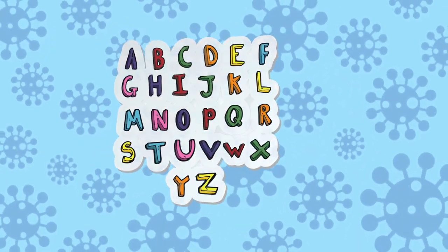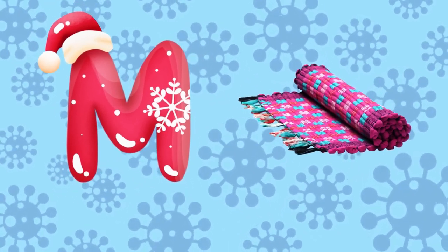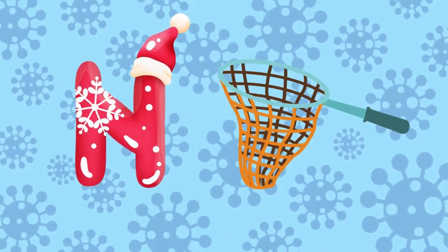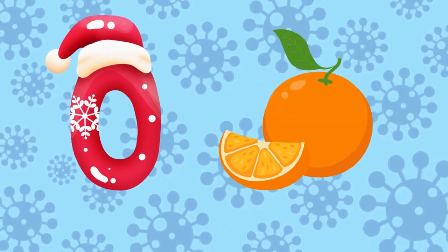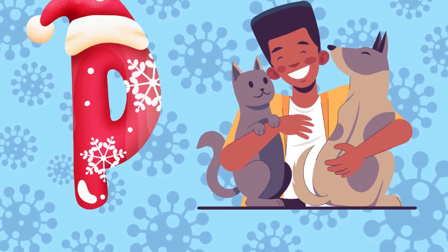M is for mat, m-m-mat. N is for net, n-n-net. O is for orange, o-o-orange. P is for pet, p-p-pet.